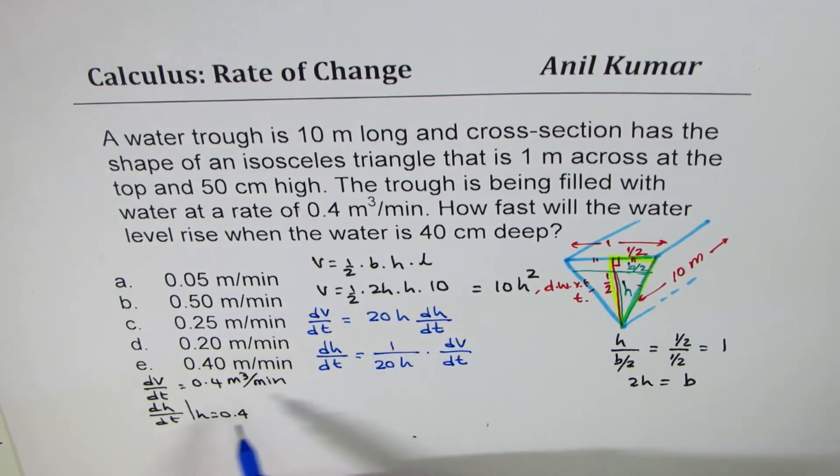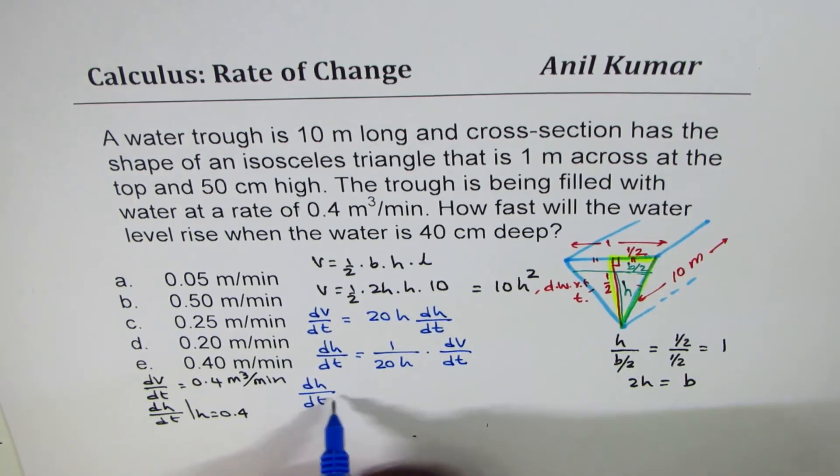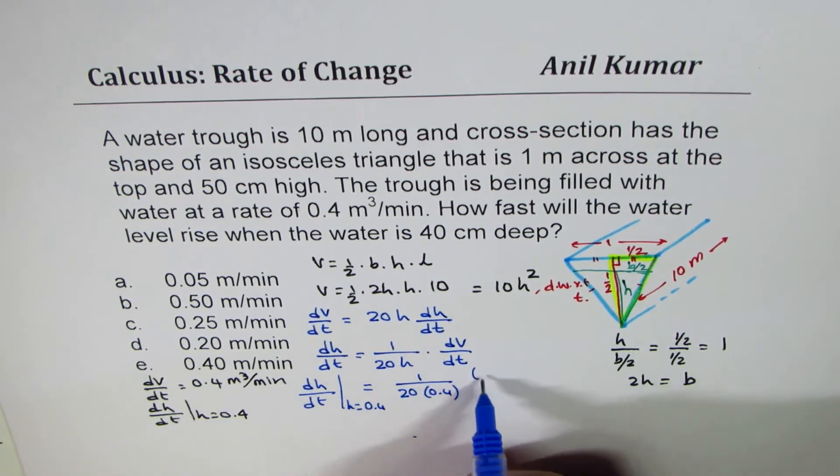Now you can always substitute all these values to find rate of change of height when height is 0.4. So we know all the values. So 1 over 20 times 0.4. dv/dt is 0.4.